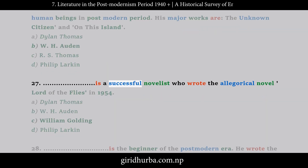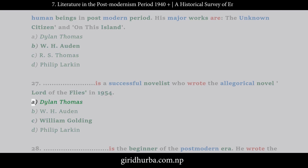Question 27: Who is a successful novelist who wrote the allegorical novel Lord of the Flies in 1954? A. Dylan Thomas. B. W.H. Auden. C. William Golding. D. Philip Larkin.